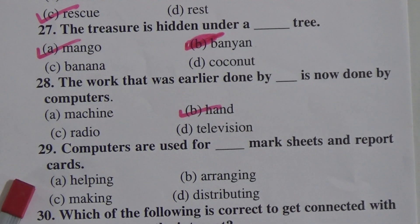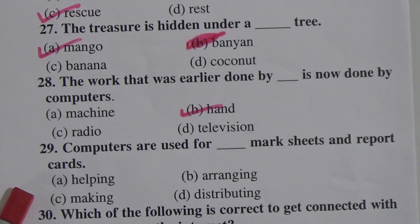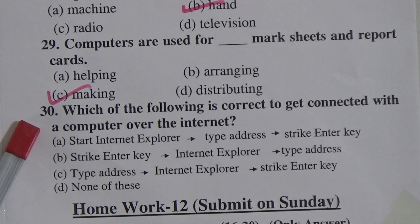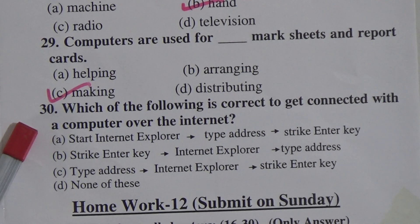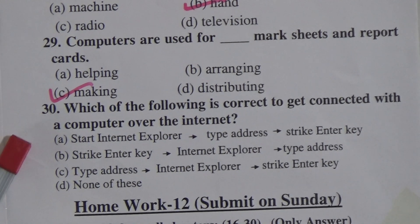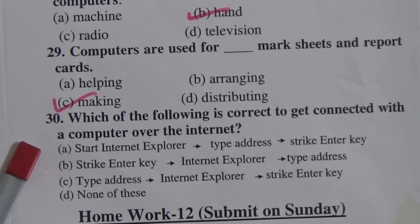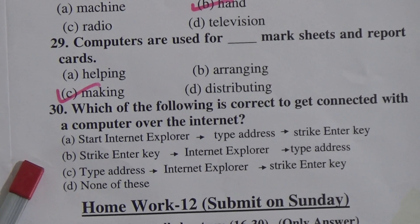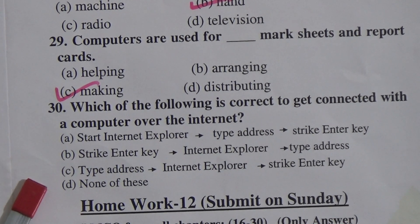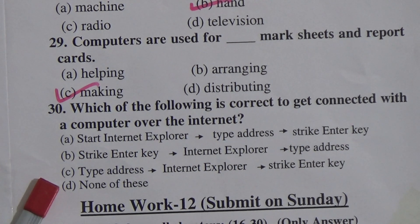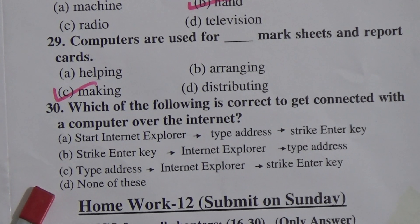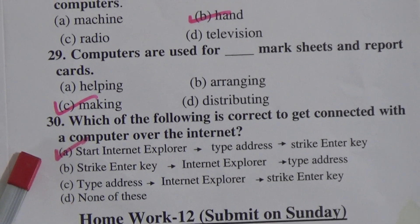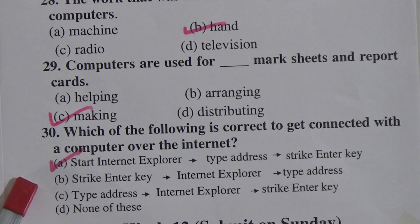Question 29: Computers are used for dash mark sheets and report cards — helping, arranging, making, or distributing. The answer is making mark sheets and report cards. Question 30: Which of the following is correct to get connected with a computer over the internet? Option A: start internet explorer, type address, strike enter key. Option B: strike enter key, internet explorer, type address. Option C: type address, internet explorer, strike enter key. Option D: none of these. The answer is start internet explorer, type address, and strike enter key.